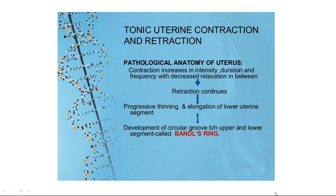Next is tonic uterine contraction and retraction — what happens in obstructed labor — that is Bandl's ring, the pathological retraction ring. This is a pathological anatomy where contractions increase in intensity, duration, and frequency with decreased relaxation in between. Contraction and retraction continue, while the lower segment progressively dilates and thins out. A demarcation develops between the upper and lower uterine segments, referred to as Bandl's ring — the pathological retraction ring, seen in obstructed labor.